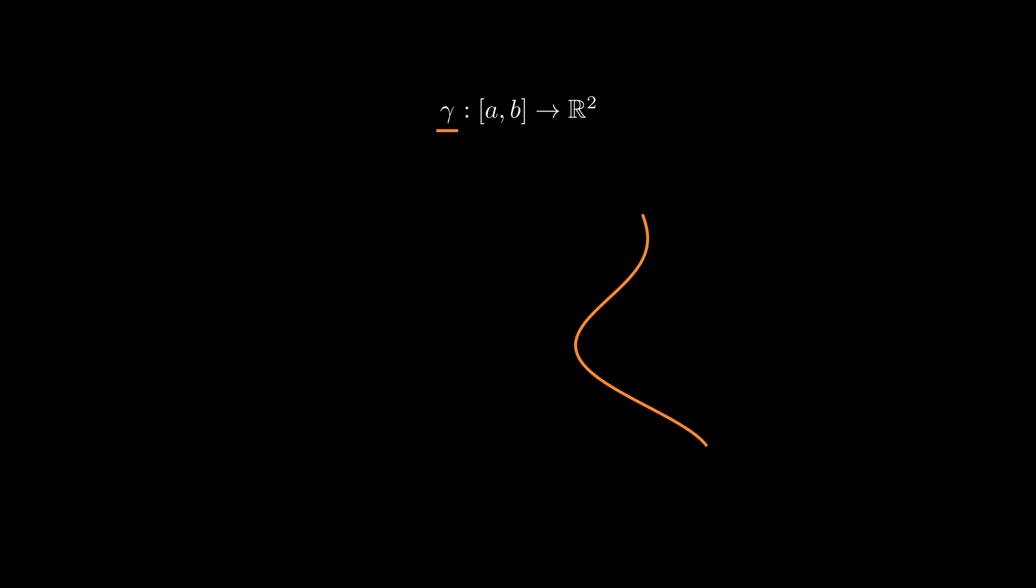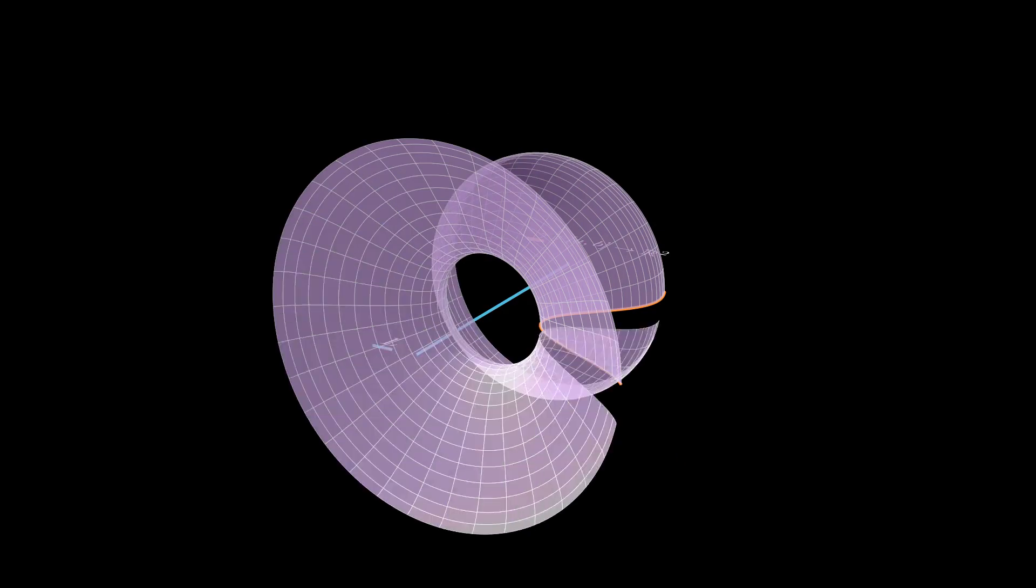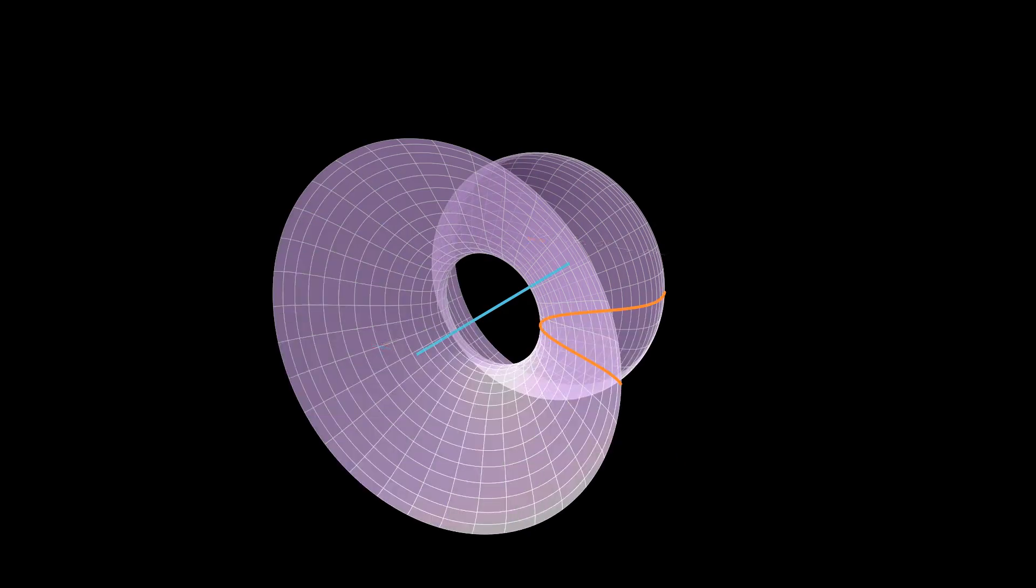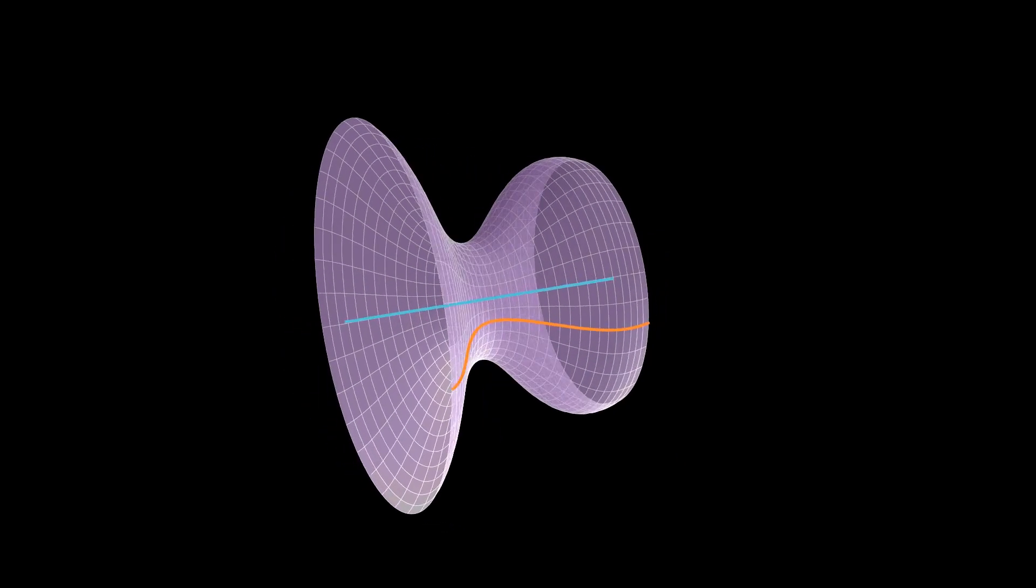To generate a surface of revolution, we take gamma, a simple smooth regular curve in the plane, and a line L that doesn't intersect gamma. We then think of these two objects in the three-dimensional space and rotate gamma around L. This object is the surface of revolution associated to gamma.